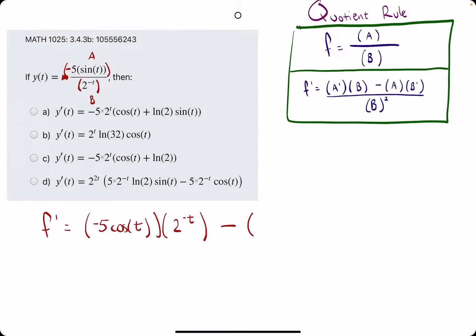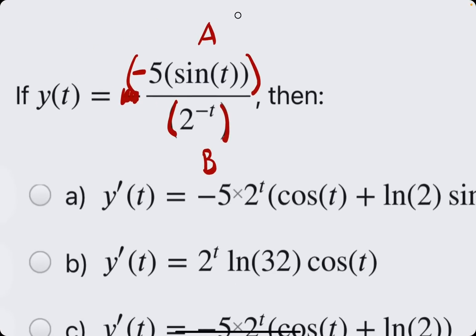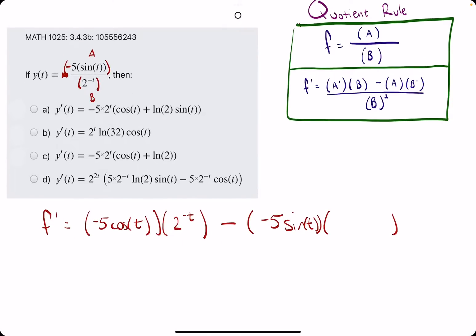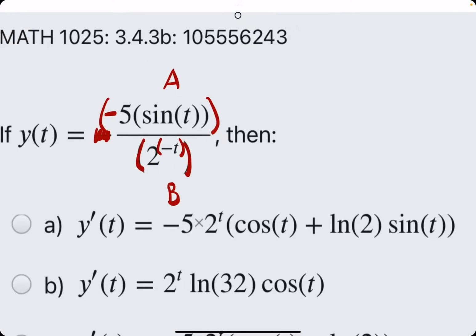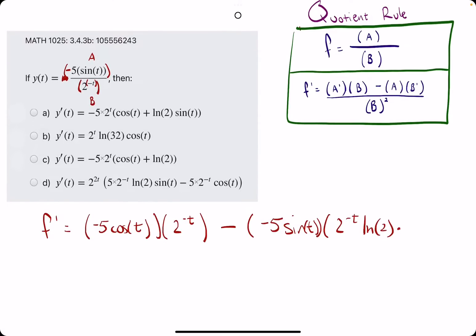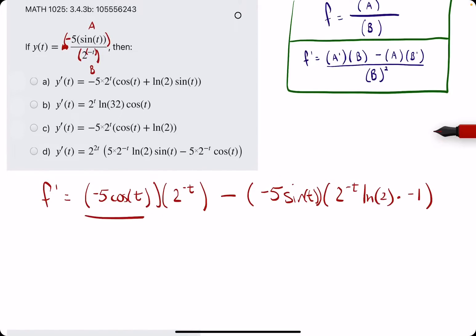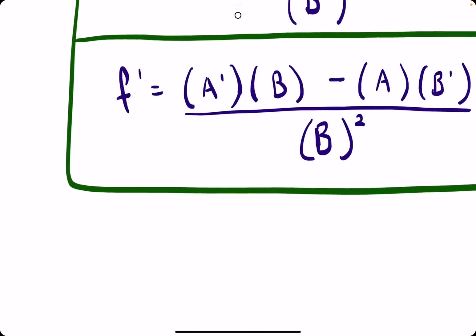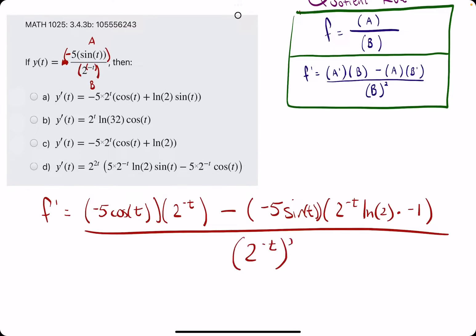2 to the negative t. Big minus in the middle. Big a next. Regular a from the numerator. And then we end with b prime, the derivative of 2 to the negative t. Anytime you have a number raised to a variable term, we keep that same exact term, then multiply by ln of the base number, ln of 2. And then this one requires a small chain rule piece. The derivative of negative t is negative 1, so we tag that on to b prime's derivative. On the bottom we have b squared, so 2 to the negative t all squared.